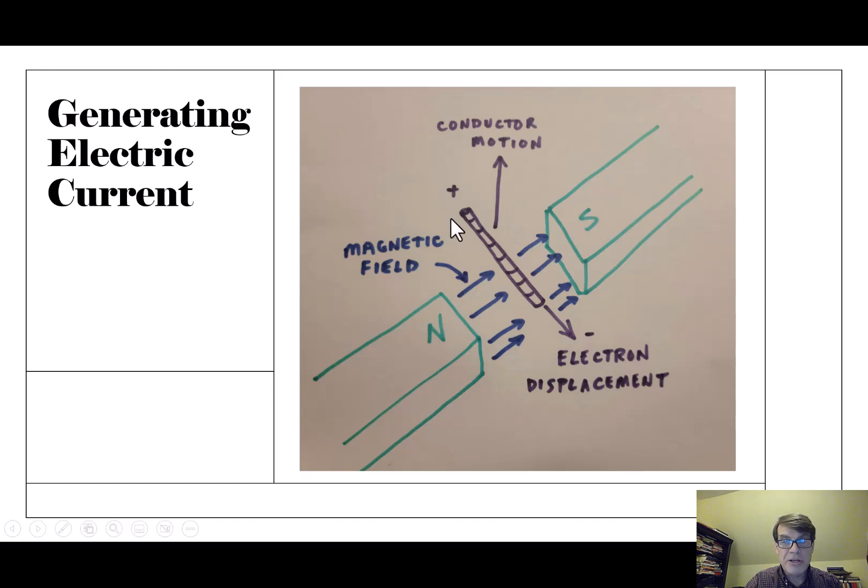But if you move a conductor up through a magnetic field, it generates electricity. Electrons are moved by this motion in this direction. And so because the electrons are moving in this direction, this is the negative end electrically, and then the positive end is this way. Why? Because the electrons are coming this way, and so we've got negativity coming this direction.